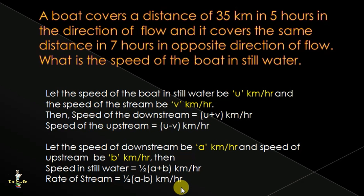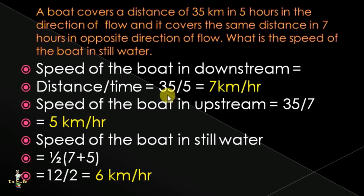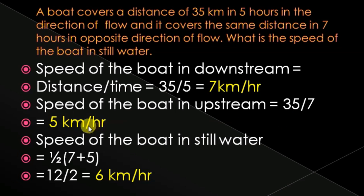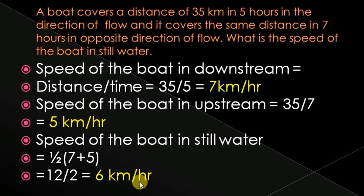Speed of boat downstream = 35/5 = 7 km/hr. Speed of boat upstream = 35/7 = 5 km/hr. Speed of boat in still water = (1/2)(7 + 5) = 12/2 = 6 km/hr.